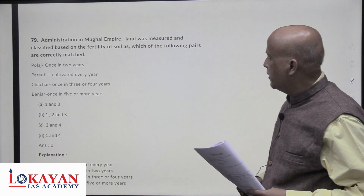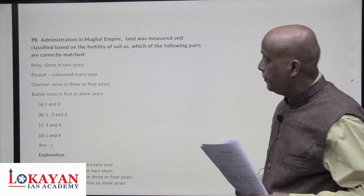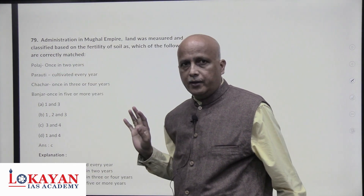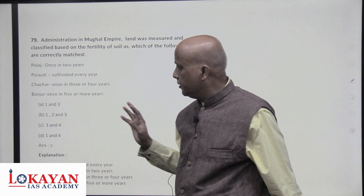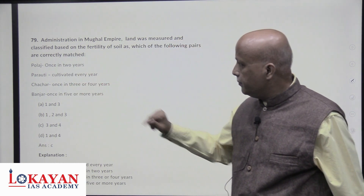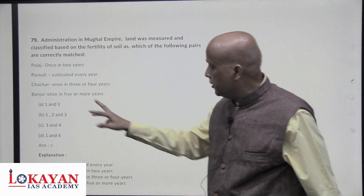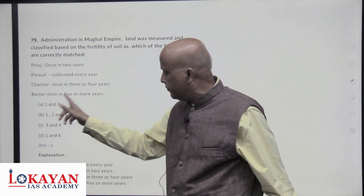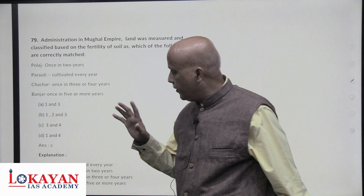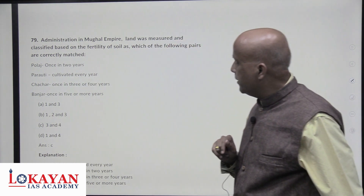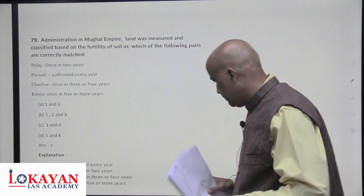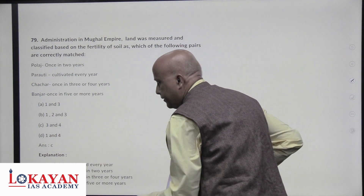In the Mughal Empire, land was measured and classified based on soil fertility. Polaj is continuously cultivated land every year — the best land. Parauti is alternative-year cultivation. Chachar is once in three years, and Banjar is once in five years or more. So statements one and two are incorrect and statements three and four are correct — answer is C.